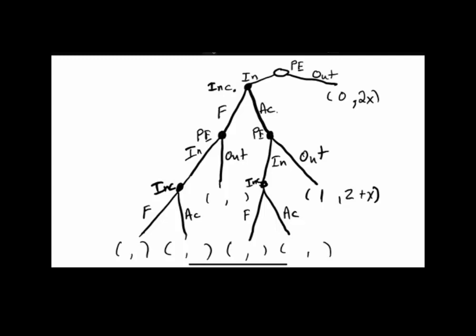Now let's fill out the payout where the potential entrant chose in, the incumbent fought, and then the potential entrant exited. The potential entrant earns zero the period they're out and lost a dollar when they were in and the incumbent fought, so it's negative one total. The incumbent had a monopoly one period earning X, and chose to fight the other period earning Y, so the total payout is Y plus X. So the payouts here are negative one for the entrant and Y plus X for the incumbent.